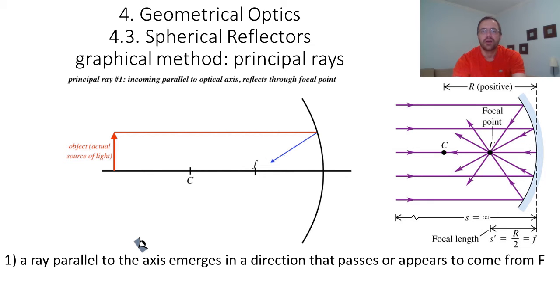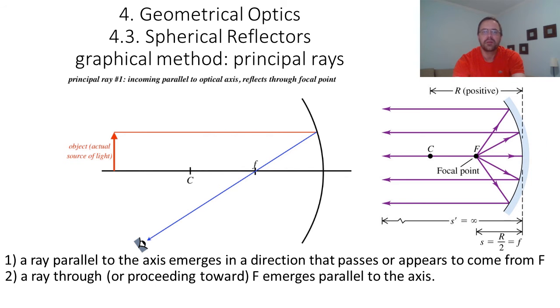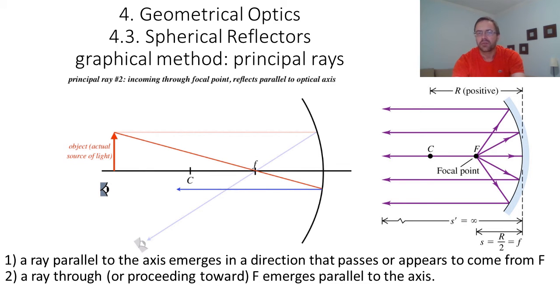The second principal ray is a ray that passes through or proceeds towards f. That ray emerges parallel to the axis. Again, any ray will follow this rule, but you only need to trace one of them, and so you trace one that passes through the object.